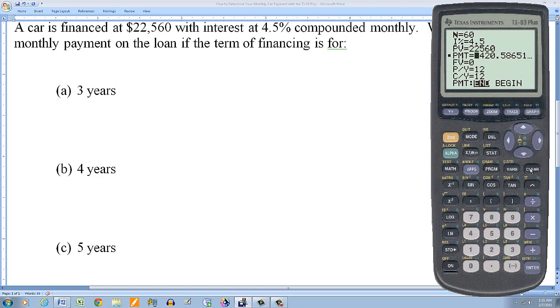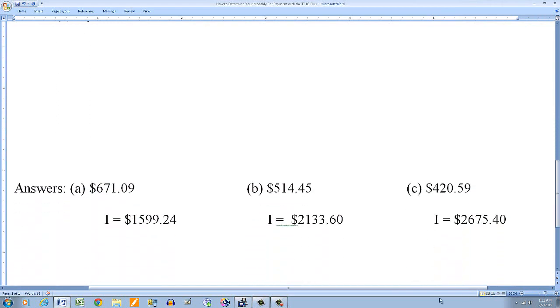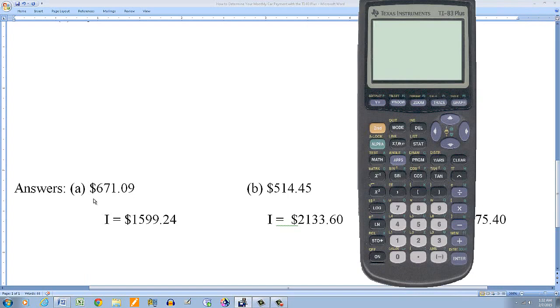Okay. So let's see how much interest we're paying if we do that. Okay. So I've already computed these, but here's the way you would do it. Okay. So in the first option, if I go for three years, it's 36 payments times the amount of the payment, which is 671.09. Subtract. I'm financing, though, the $22,560. So hit enter. And my interest is $1,599.24. Okay. So consider that.